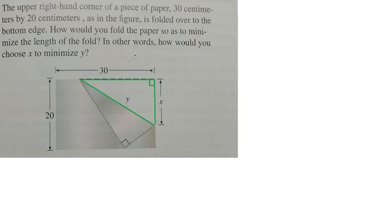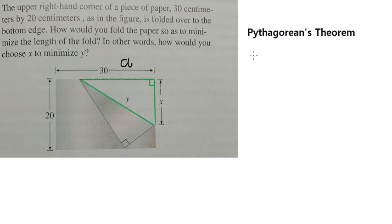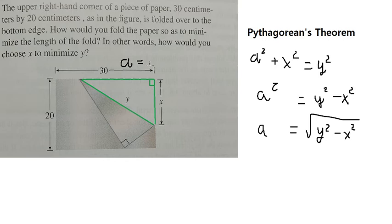For the right triangle we can use the Pythagorean theorem. That should be a² plus s² equals y². We put the square root for both sides, and we have the square root of y² minus s².